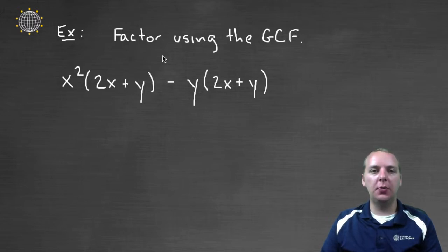So here in the first example, we're going to factor x squared times the quantity 2x plus y minus y times the quantity 2x plus y.